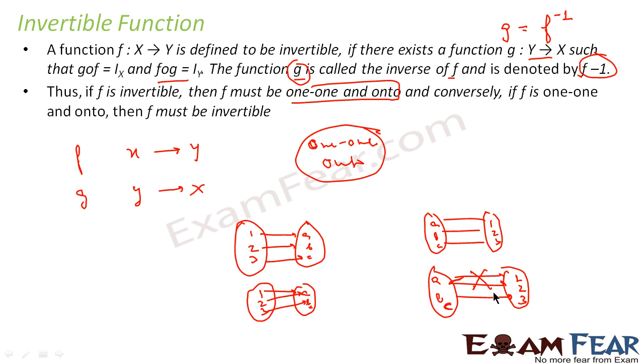In such a case also, the inverse does not exist. So we can analyze here that for an inverse to exist, the function must be one-one and onto, and then only the function is invertible.